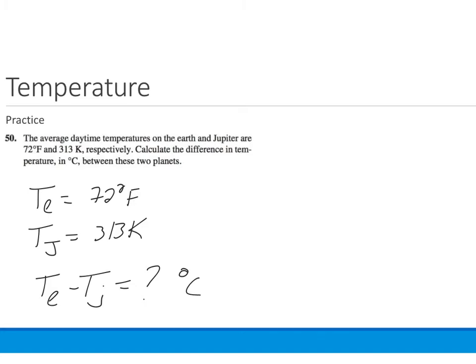We have to convert these both into degrees C. Let's start off with temperature on Jupiter in degrees C. That's the easy one. To get the Kelvin temperature, you take the temperature in degrees C and add 273.15. Therefore, to get the temperature in degrees C, you would take the Kelvin temperature and subtract 273.15. So temperature in degrees C equals 313 Kelvin minus 273.15.